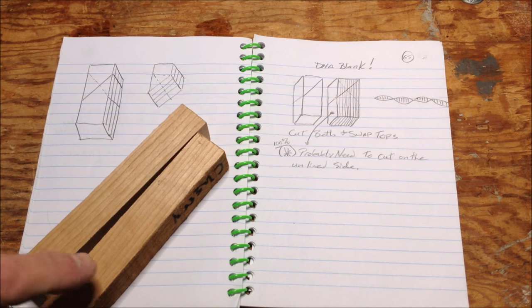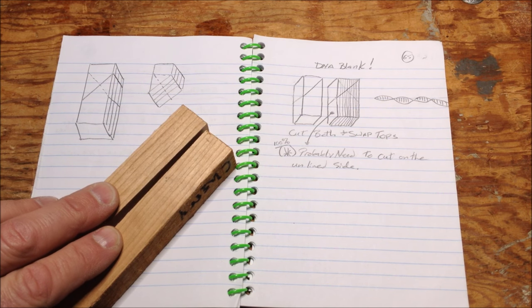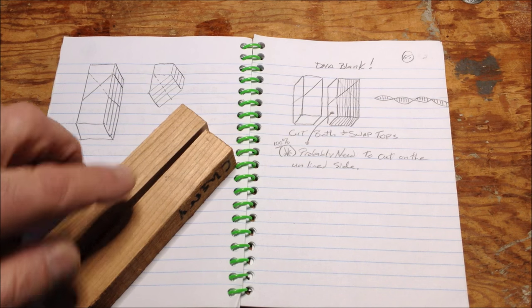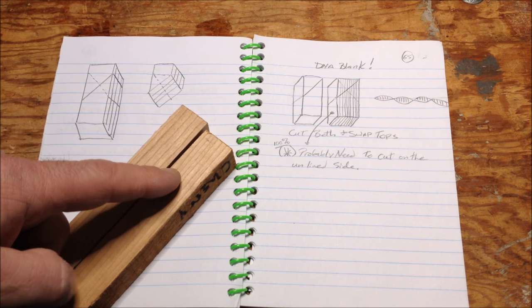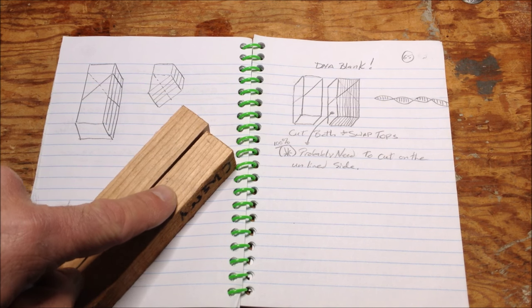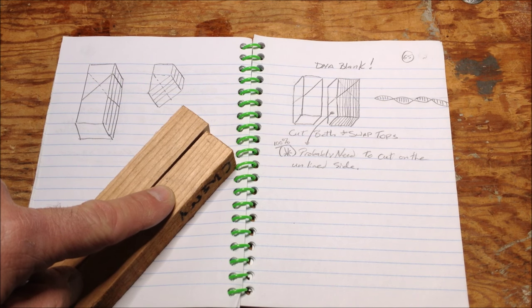For the DNA strand blank, I'm going to use two cherry blanks. What I'm going to do is on one of the blanks, I'll draw five lines, I'll cut the blank, and then I'll insert or glue pieces of aluminum can into each of the cuts.